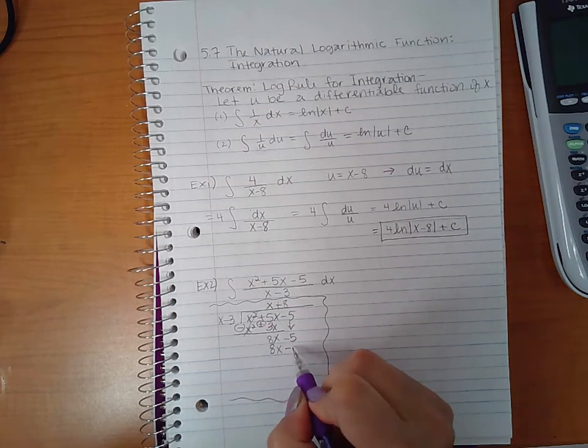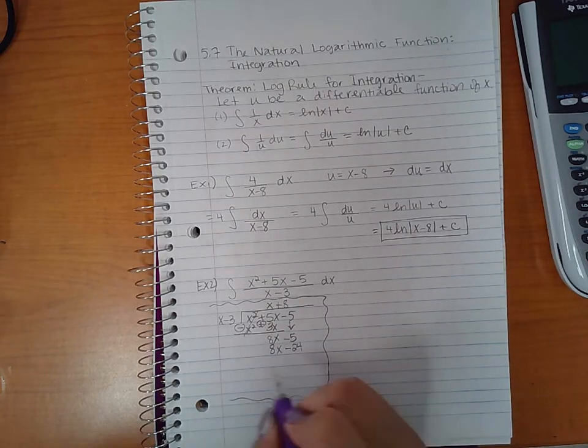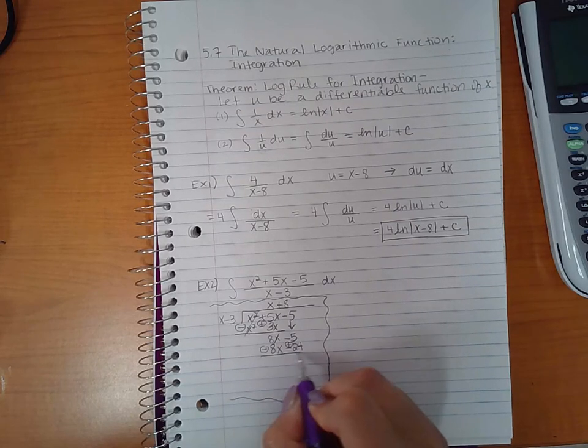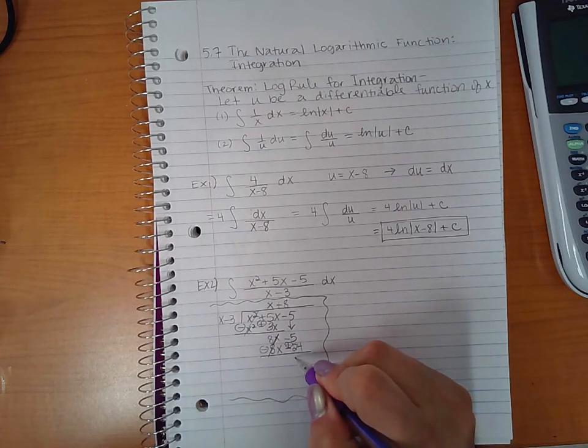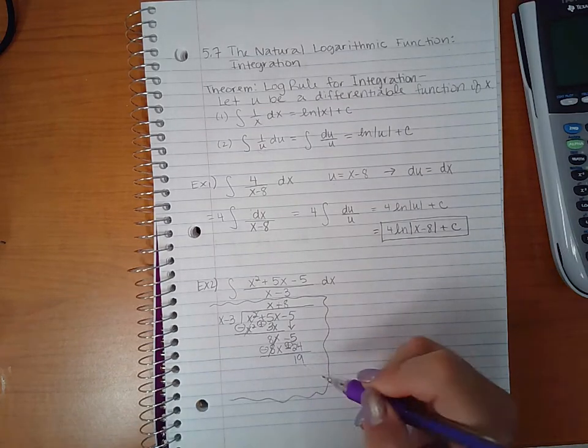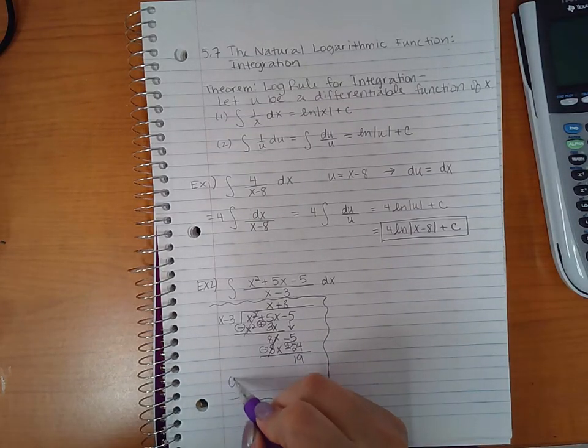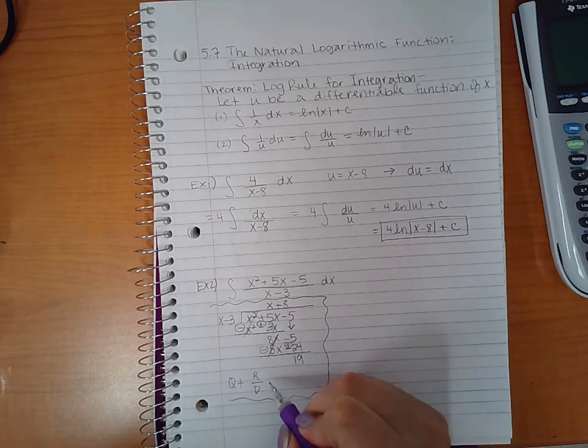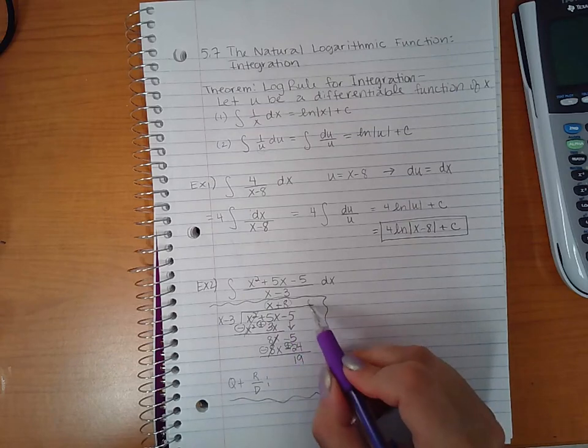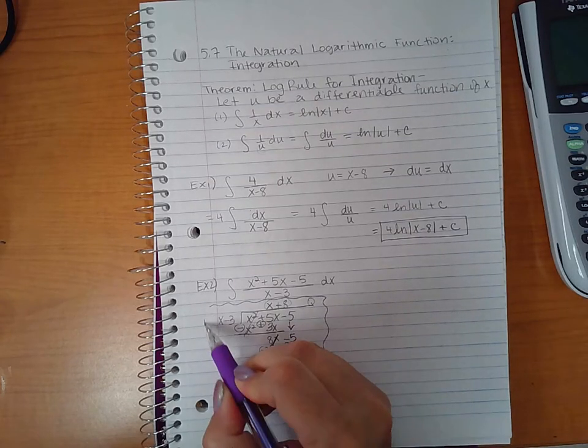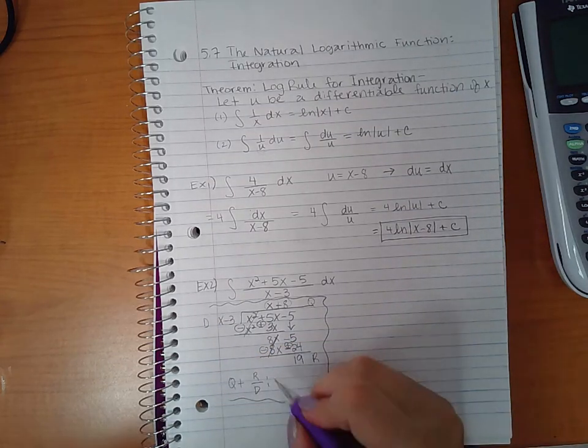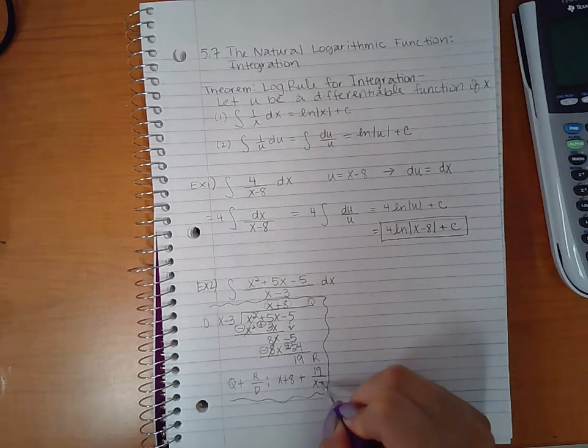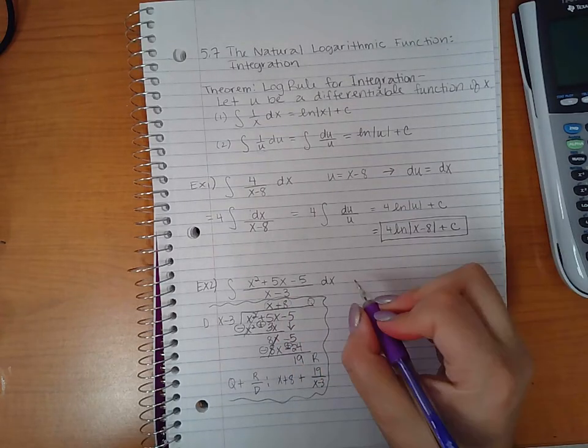Positive 8 times x is positive 8x, positive 8 times negative 3 is negative 24. Then we subtract, this will become positive, so these will cancel and you'll get 19 here. When we rewrite this, we write the quotient plus the remainder over the divisor. So in our case the quotient is this up here, this is the remainder, and this is the divisor.